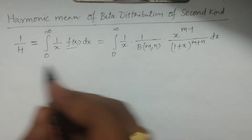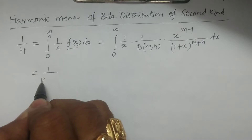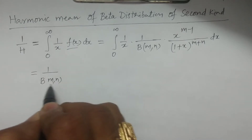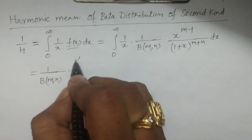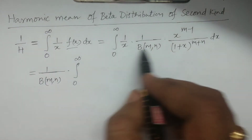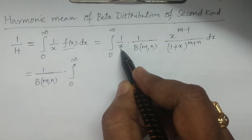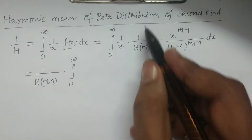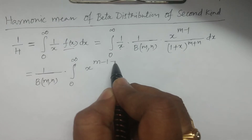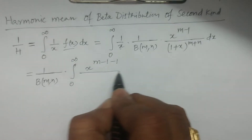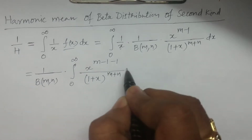Since beta(m, n) is a constant, it is equivalent to 1 by beta(m, n) multiplied by the integral from 0 to infinity. In the integration, what remains is x power m minus 1 divided by x, that is x power minus 1. Taking this into the numerator gives x power m minus 1 minus 1, divided by 1 plus x whole power m plus n dx.